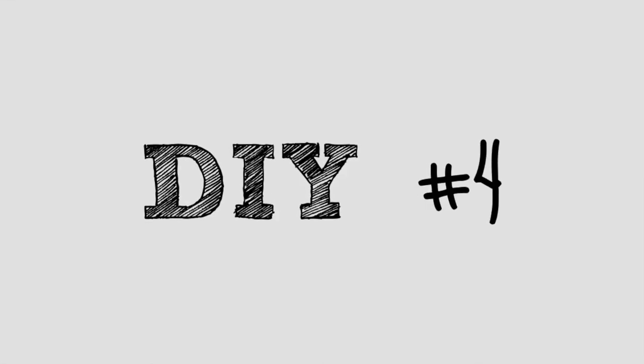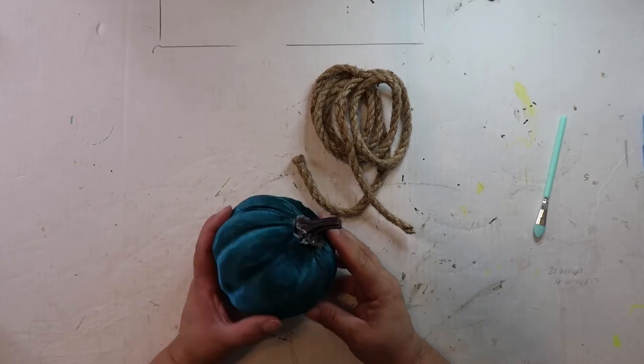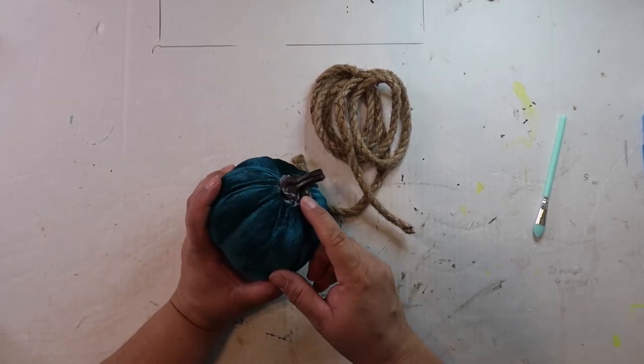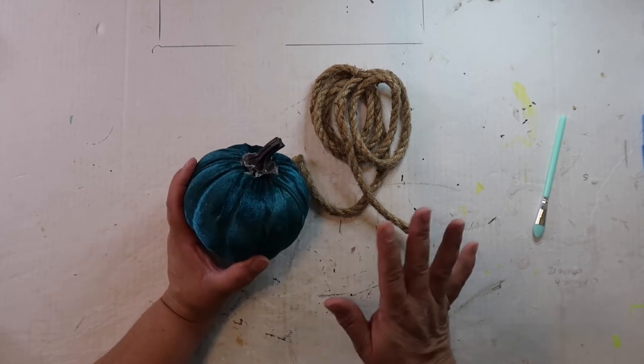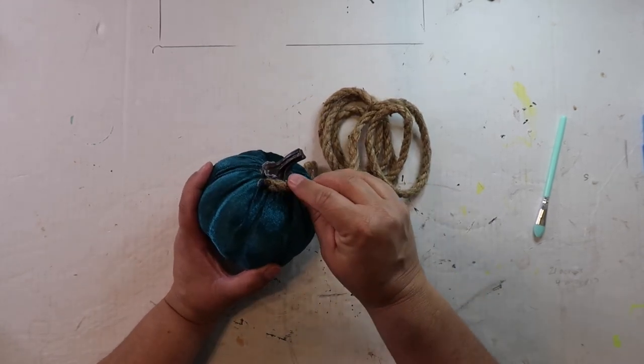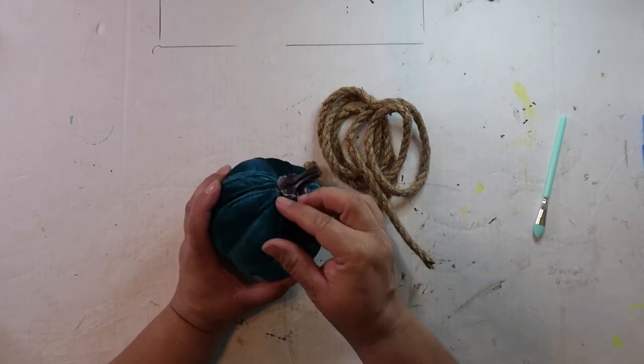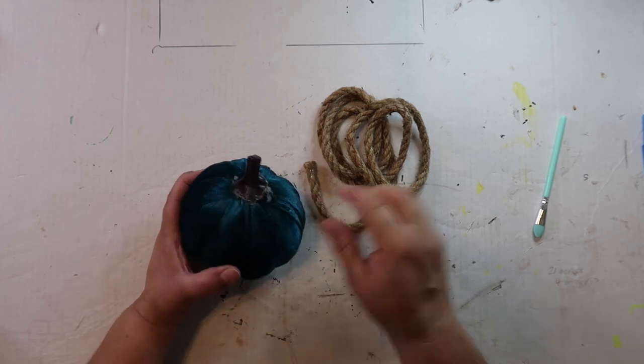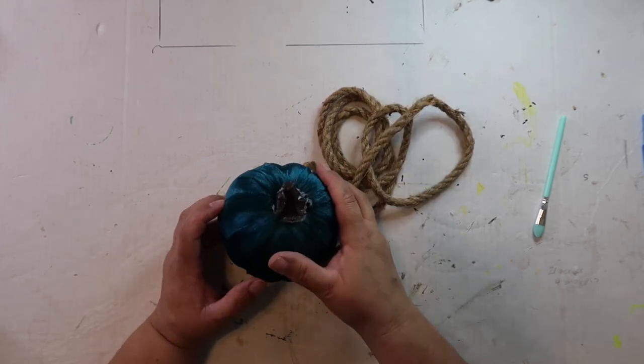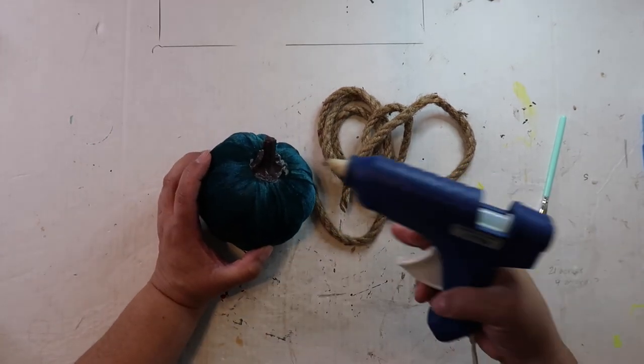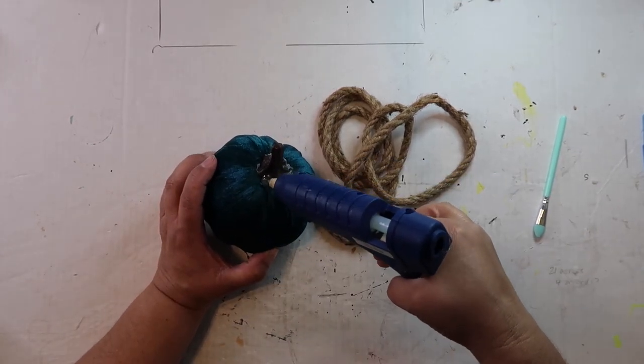DIY number four: This is a Dollar Tree pumpkin and I started to glue some smaller twine, but just to kind of zhuzh up the pumpkin, I'm gonna add some of this rope to it because I don't like the stem that much. So I'm just gonna add a little bit of glue, kind of wrap the rope around and kind of see how that looks. See if it looks a little bit better. Maybe it won't, who knows?